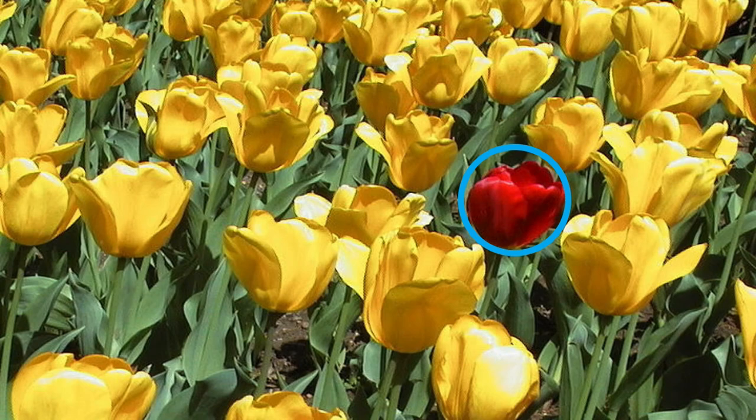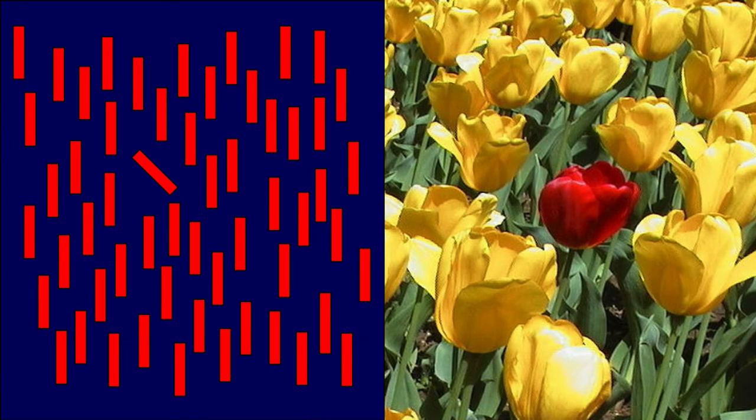Here's an orientation example. You can't help but notice the tilted bar among all the vertical bars. When you have one item that differs from a relatively homogeneous background, we call that item a singleton. This is an orientation singleton, and this is a color singleton. Phenomenologically, singletons seem to automatically capture attention.